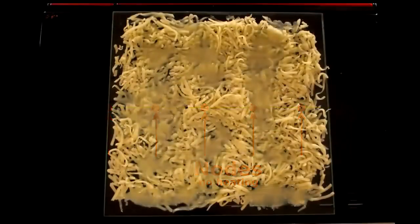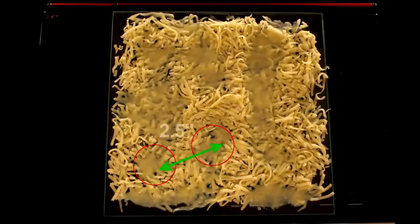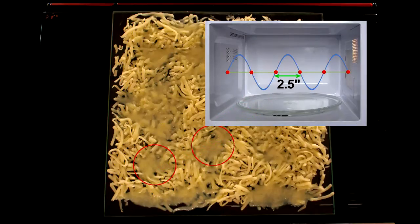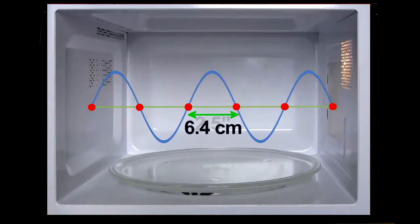If I measure the distance between melted cheese spots, I find about two and a half inches. That would be half the wavelength, the distance between nodes, and is pretty close to the actual wavelength of microwave radiation used.